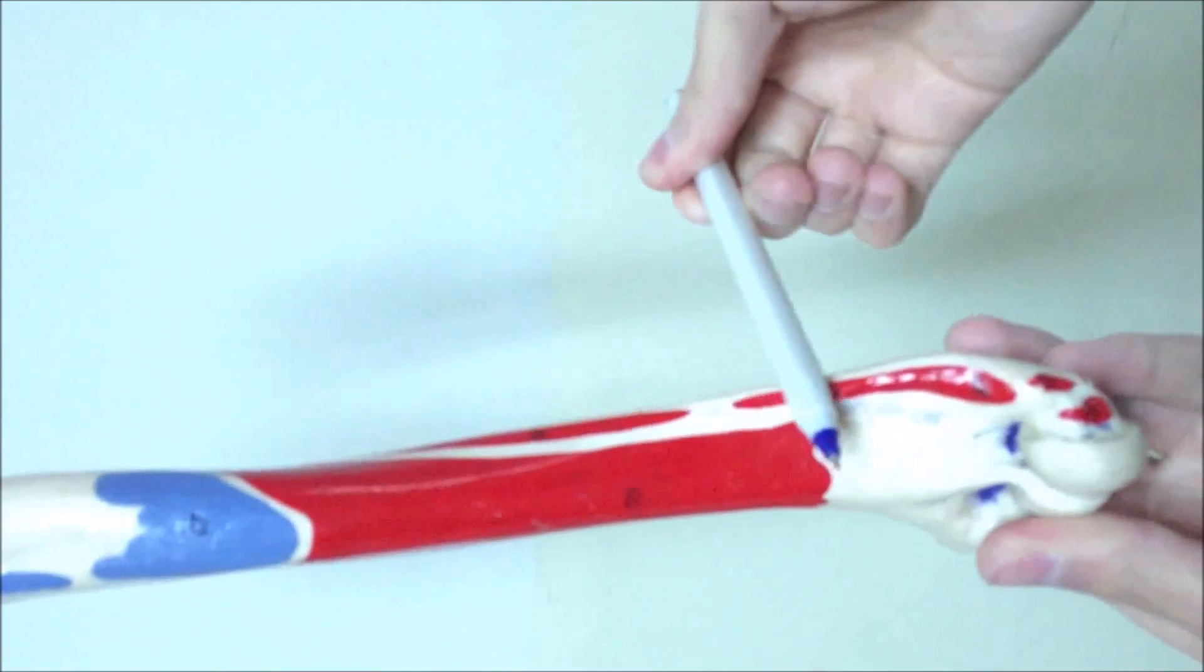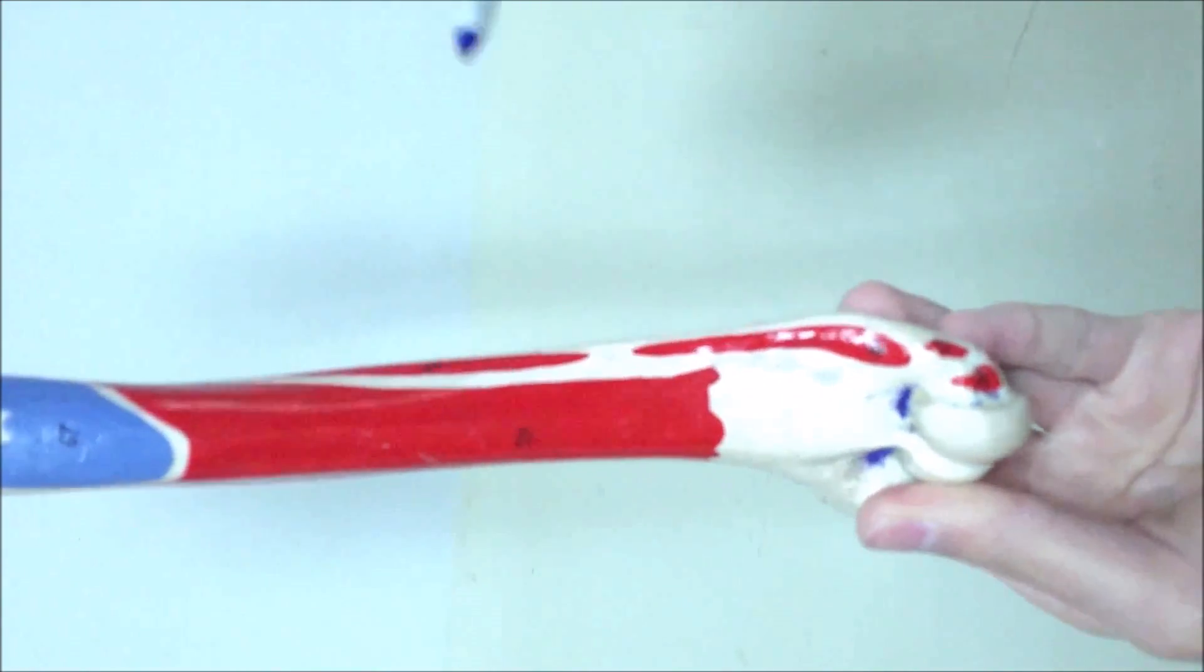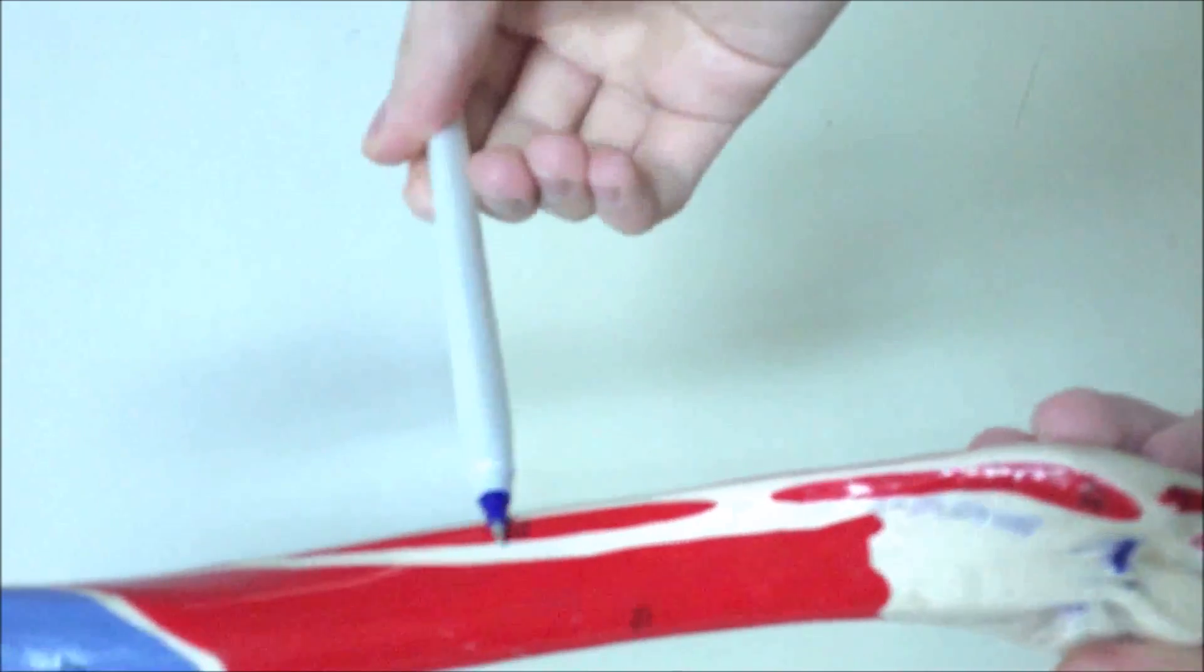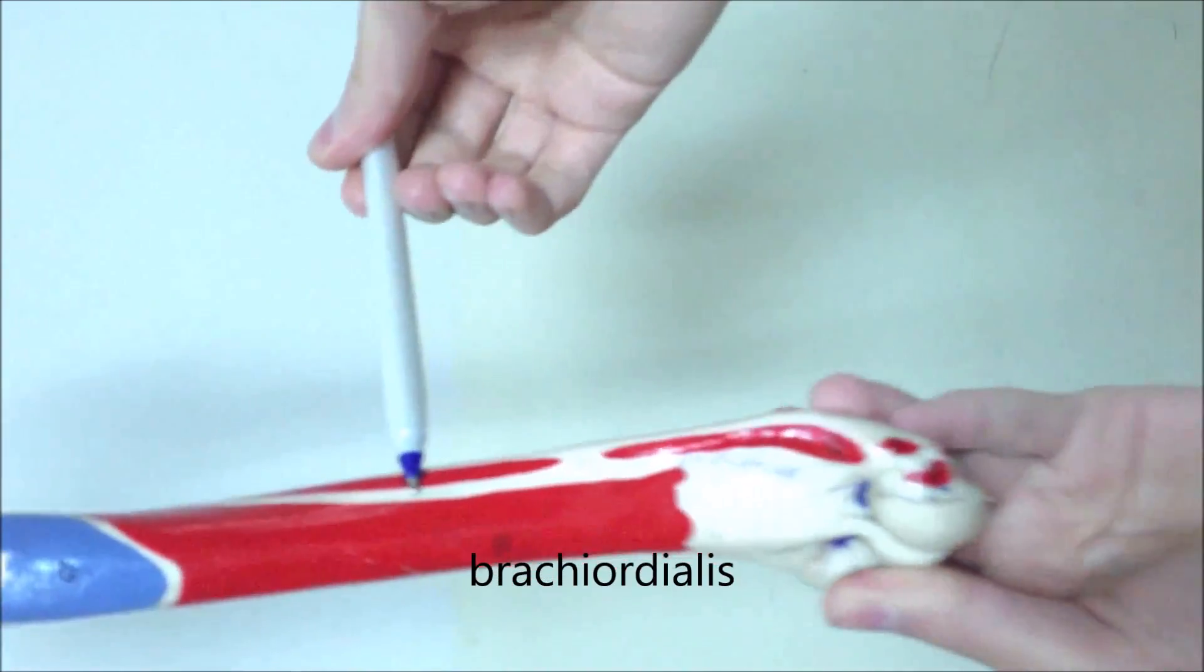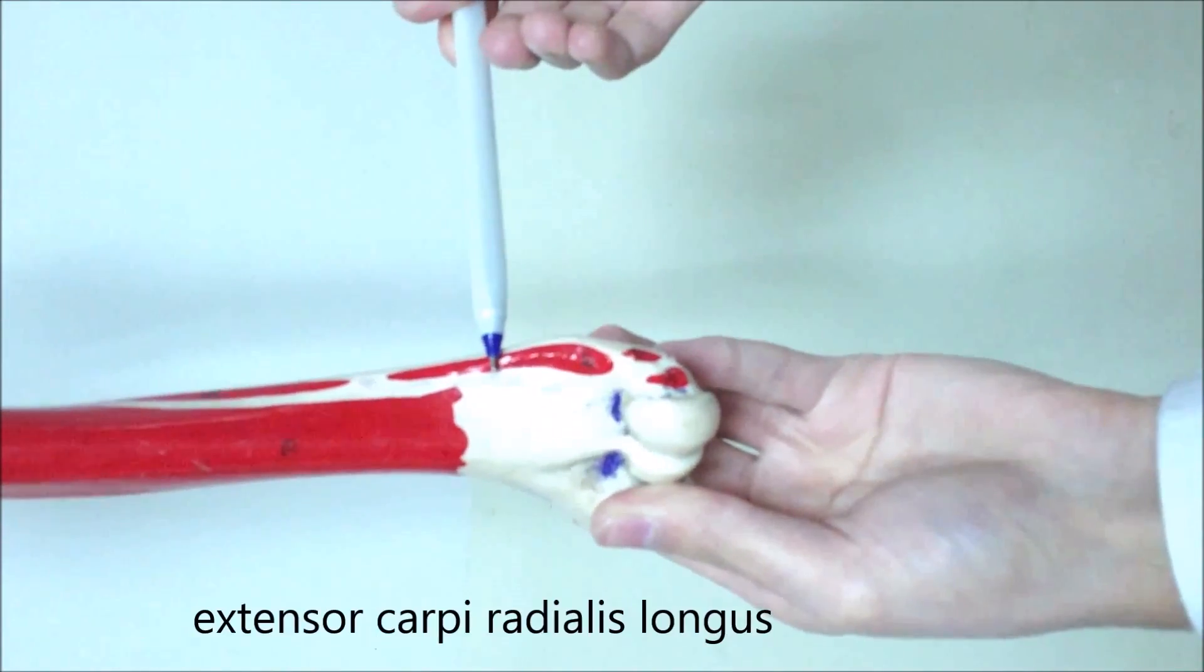From the lateral supracondylar ridge of the humerus, we have two origins. This is brachioradialis to the base of the styloid process of the radius. And this is extensor carpi radialis longus.